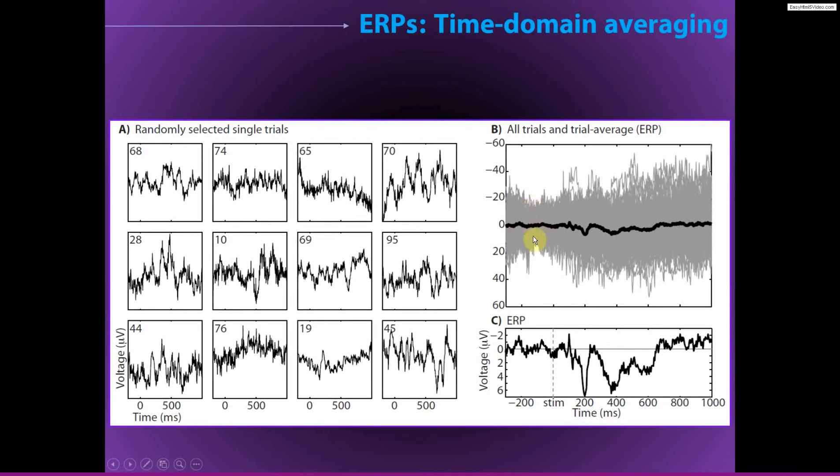And if you would take at each time point the average over all the trials, over all 99 trials, so literally just sum the voltage potential from all trials and then divide by the number of trials at each time point, you would get something like this, and this is known as the event-related potential or the ERP.